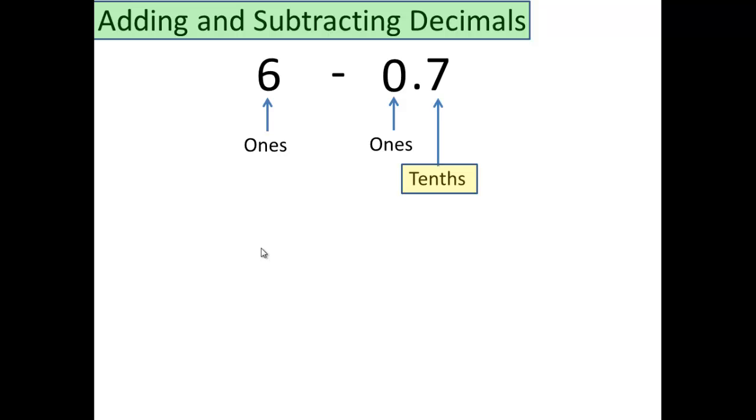So, what do you think we're going to have to do to make this speak tenths? It's a little bit tricky, but you cannot change the value of that six. It still needs to be ones. Did you say that? If you did, good job. You haven't changed the value of the six. But, you made it speak tenths by adding a decimal point and a zero to it.